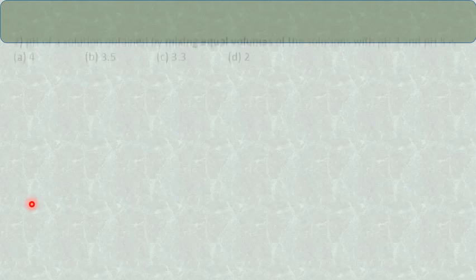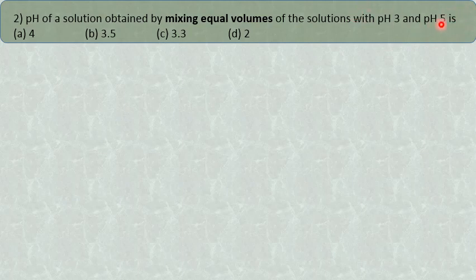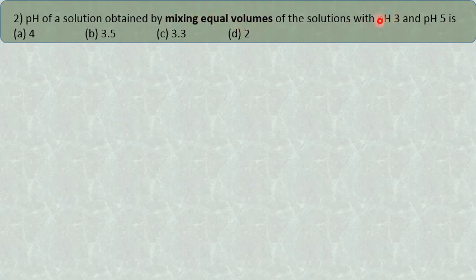Let us take another set of questions. If the pH of a solution obtained by mixing equal volumes of solutions with pH 3 and pH 5 is how much? Here, most students will go wrong by taking the average of 3 and 5, which gives 4. Unfortunately, choice A is 4. Please do not commit that mistake, because when you mix the two solutions in equal volume, the concentration of hydrogen ions present in both solutions will become half.